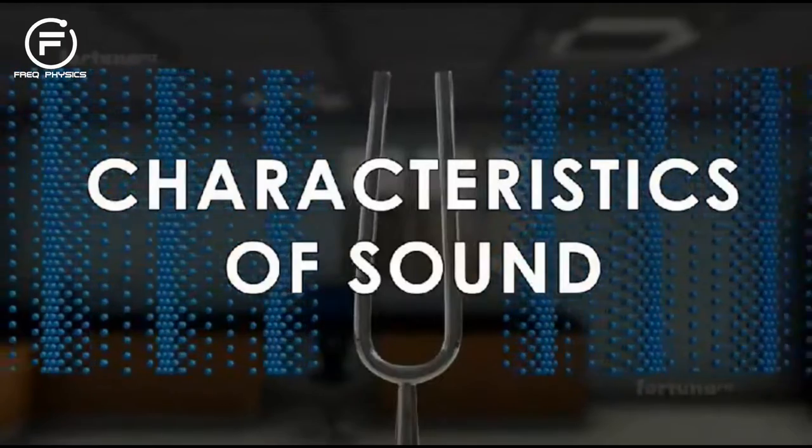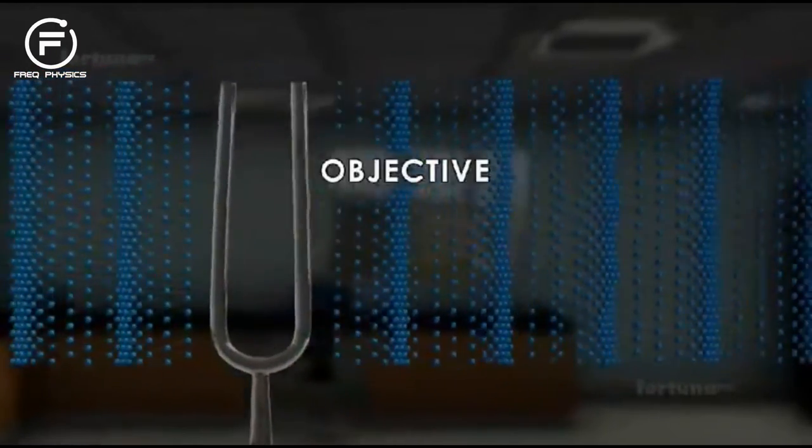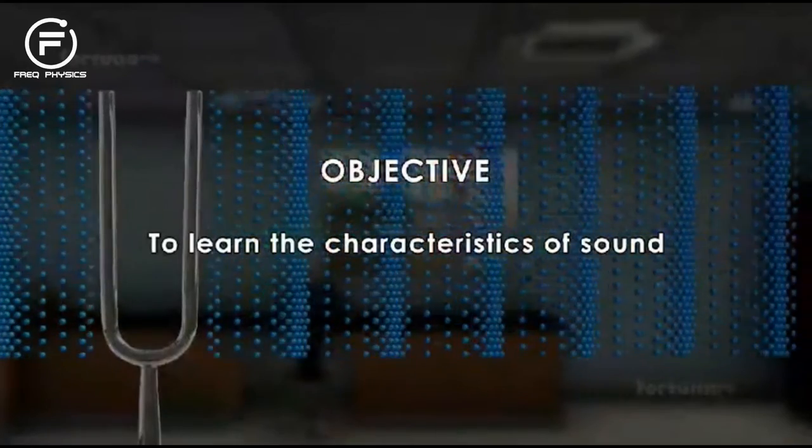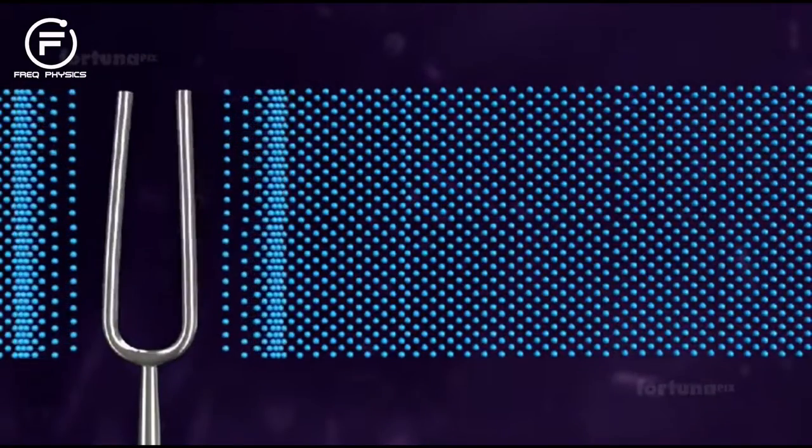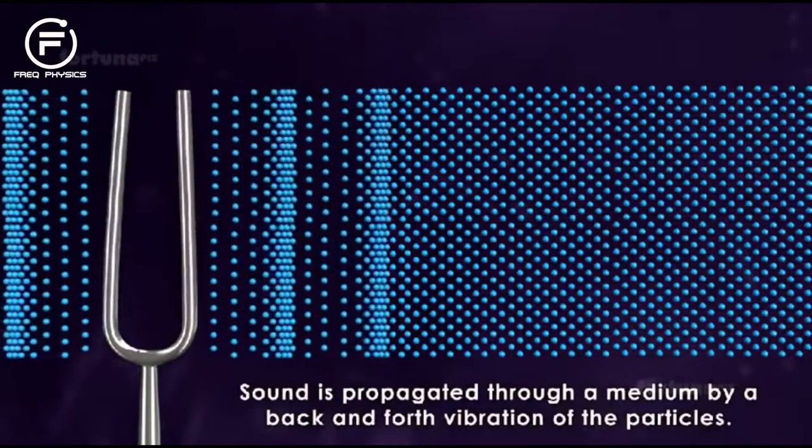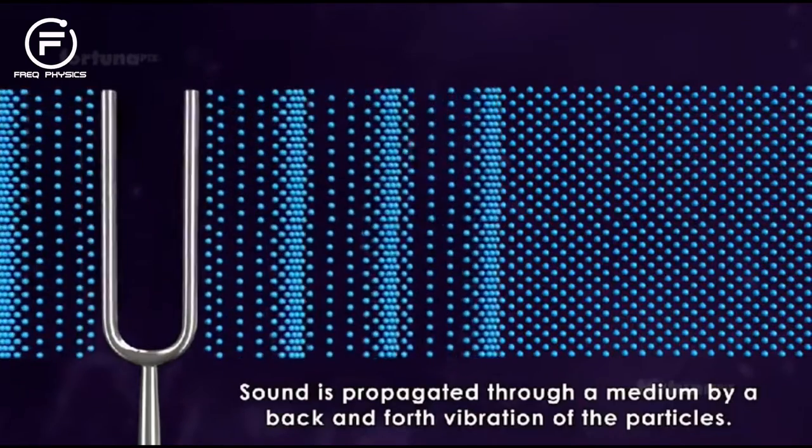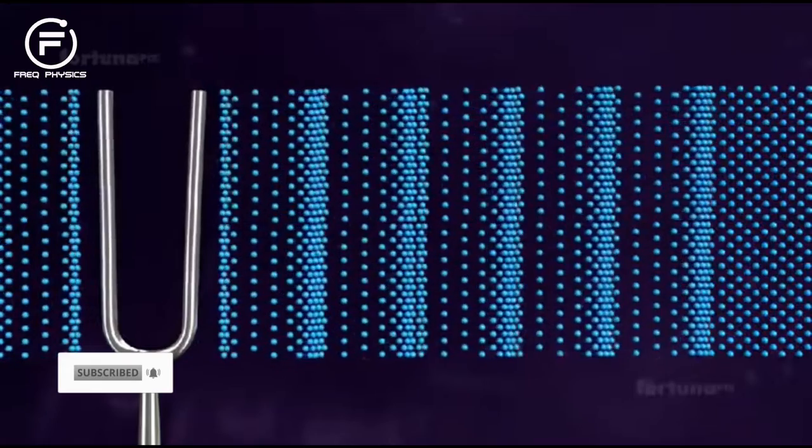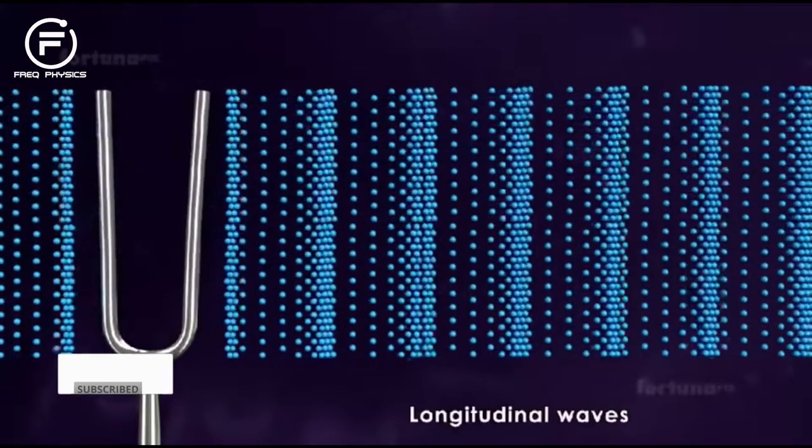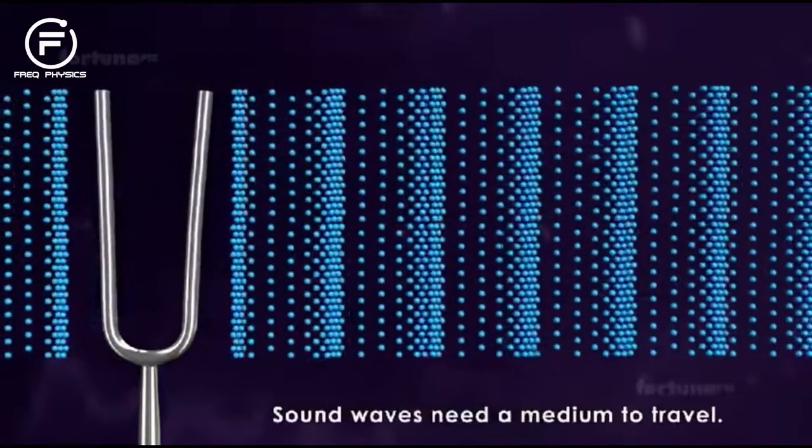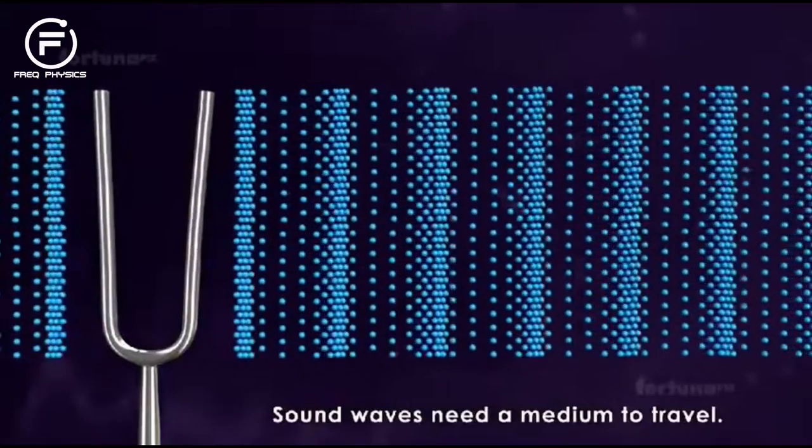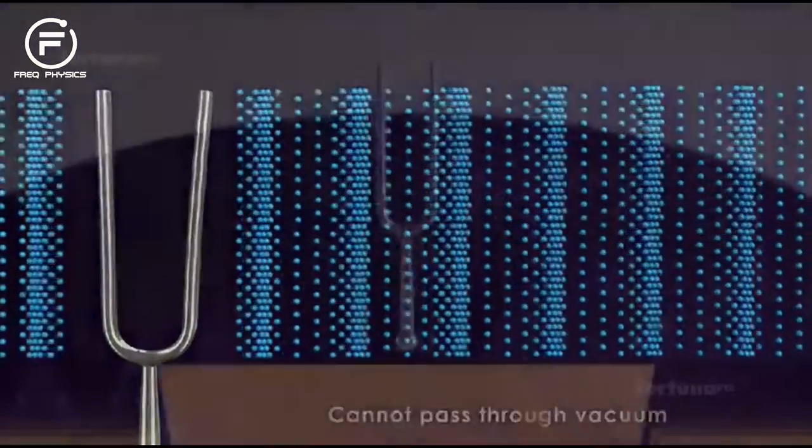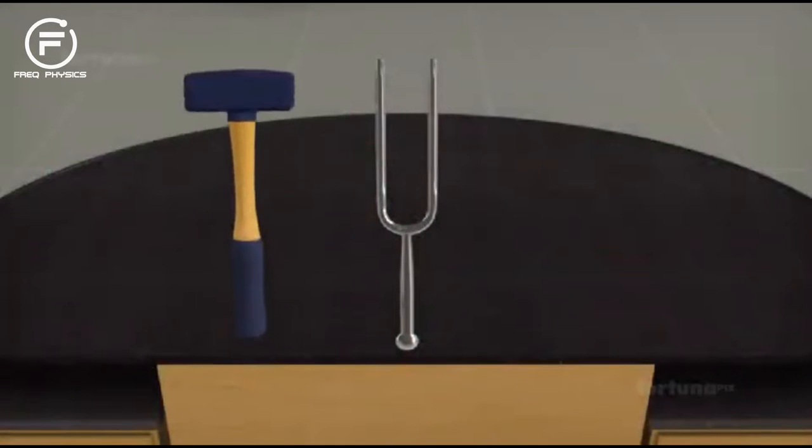Characteristics of sound. Objective: to learn the characteristics of sound. Sound is propagated through a medium by a back and forth vibration of the particles. In air, sound travels in the form of longitudinal waves. Sound waves need a medium to travel and cannot pass through vacuum.